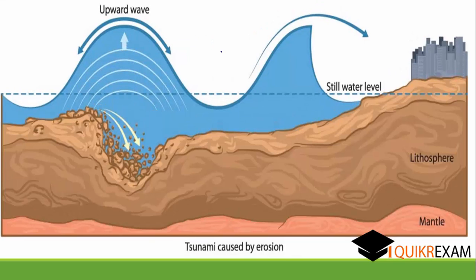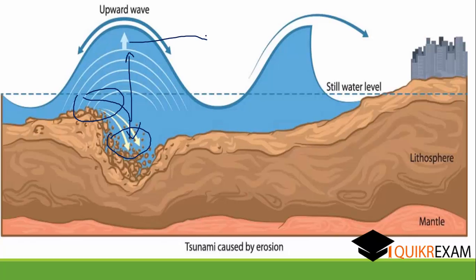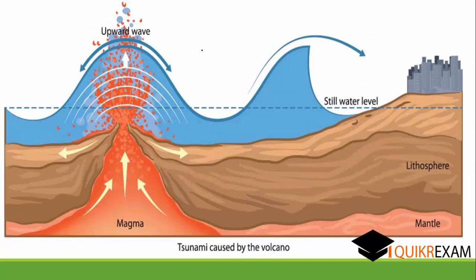The second reason is that the oceanic floor is not flat — there are some high points and some deep points. When due to erosion, rocks displace from a higher point to a lower point, water is displaced upward, a wave is generated, and when this wave travels toward the harbour, it results in a tsunami.